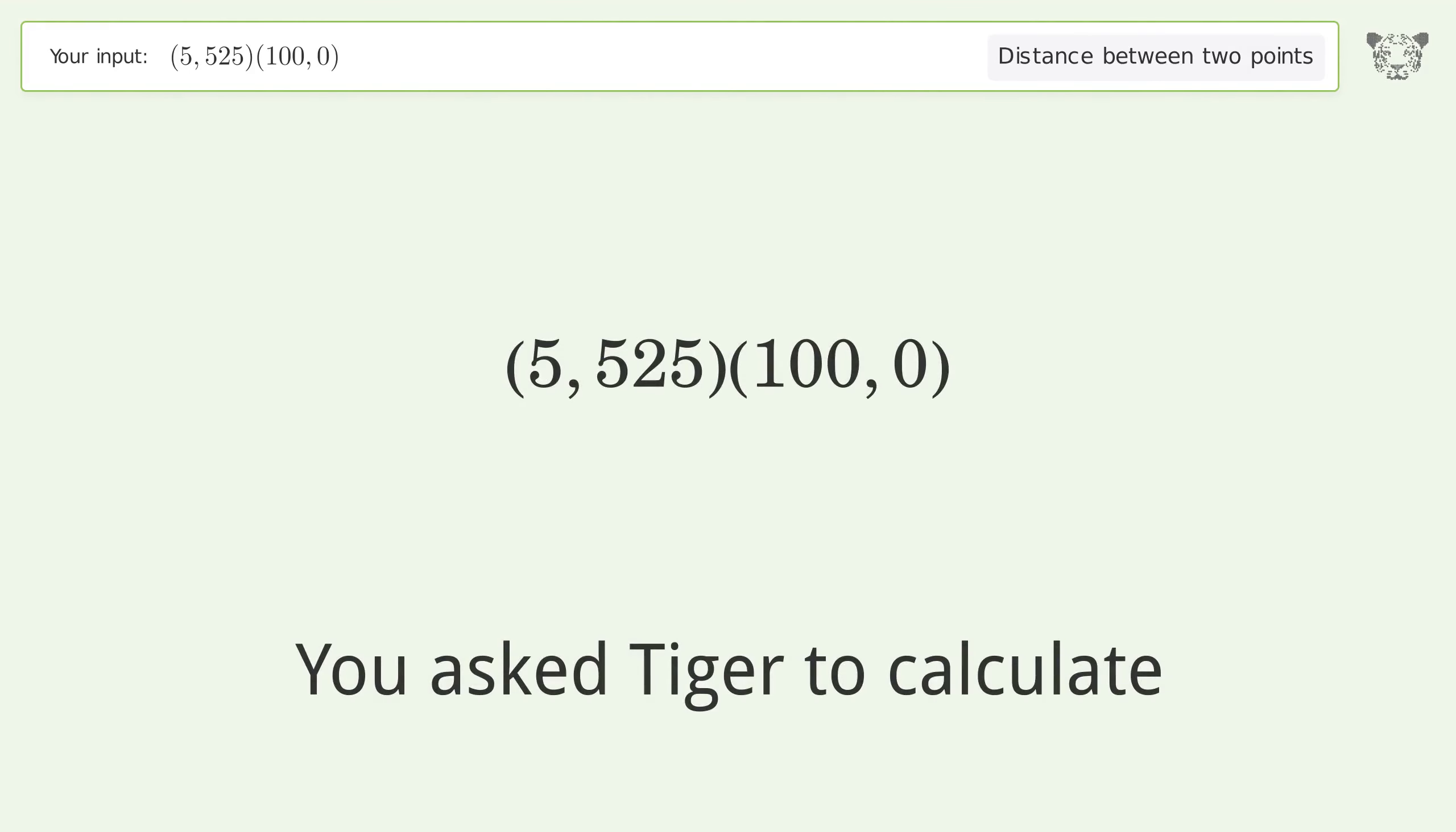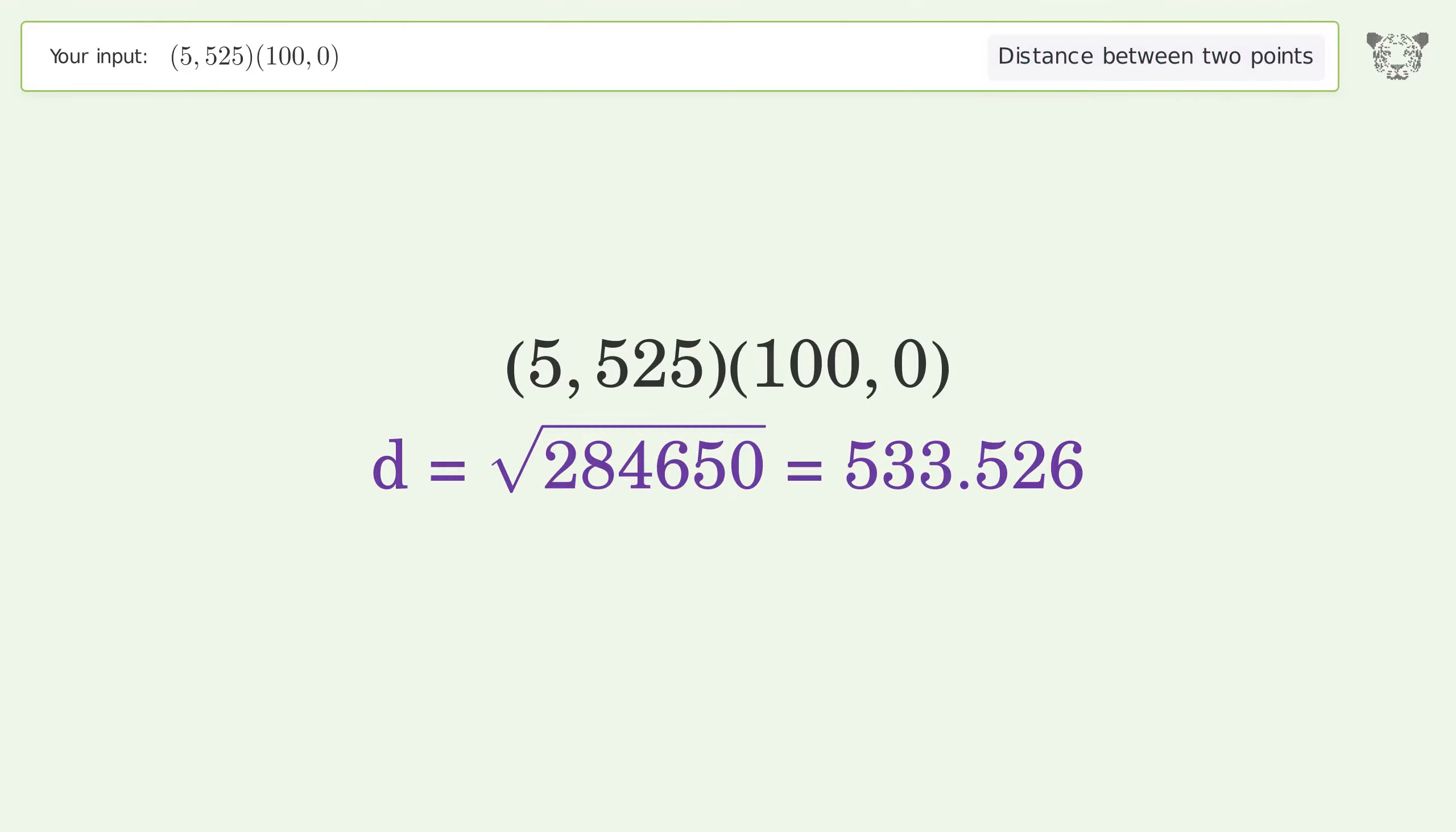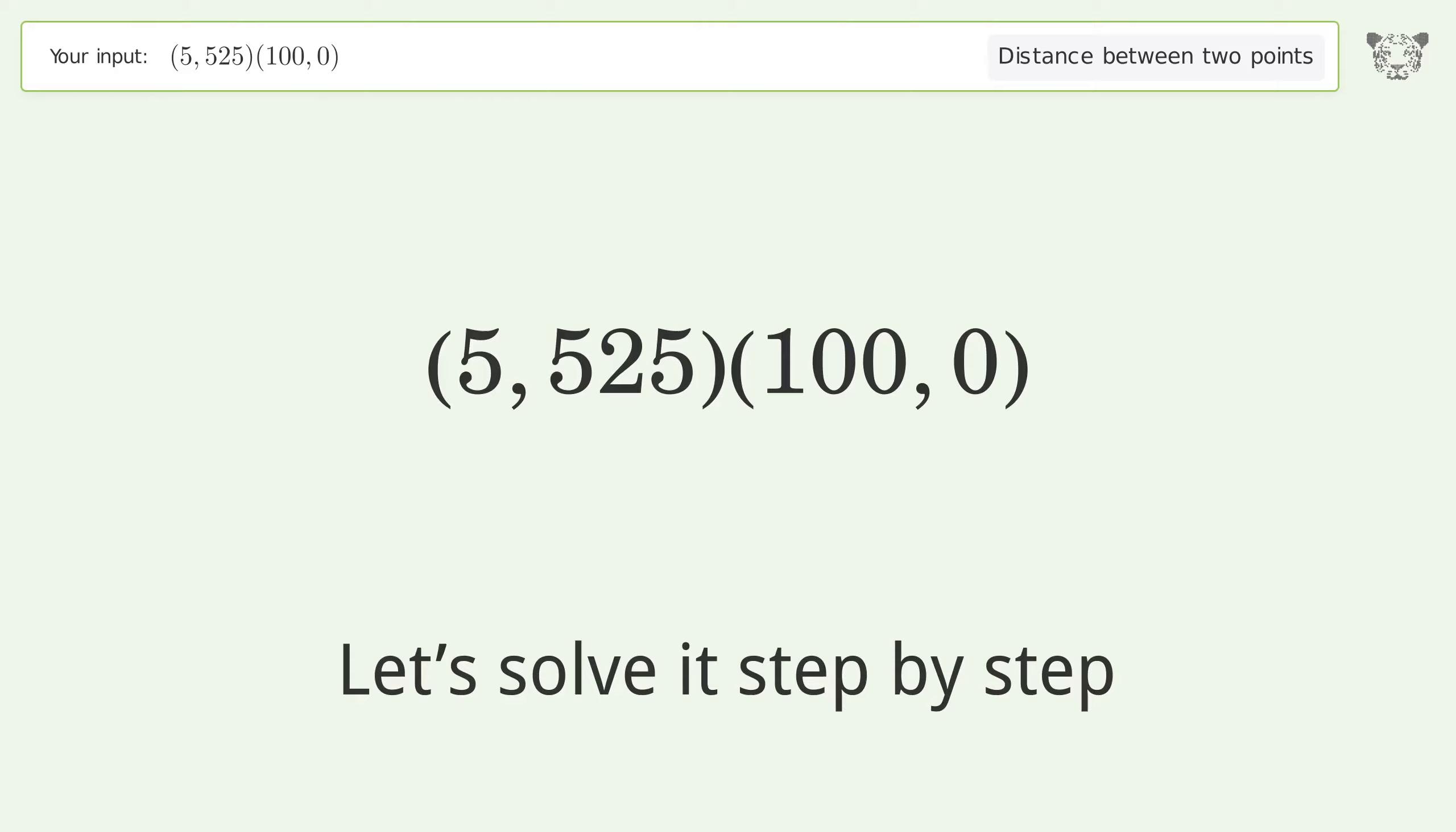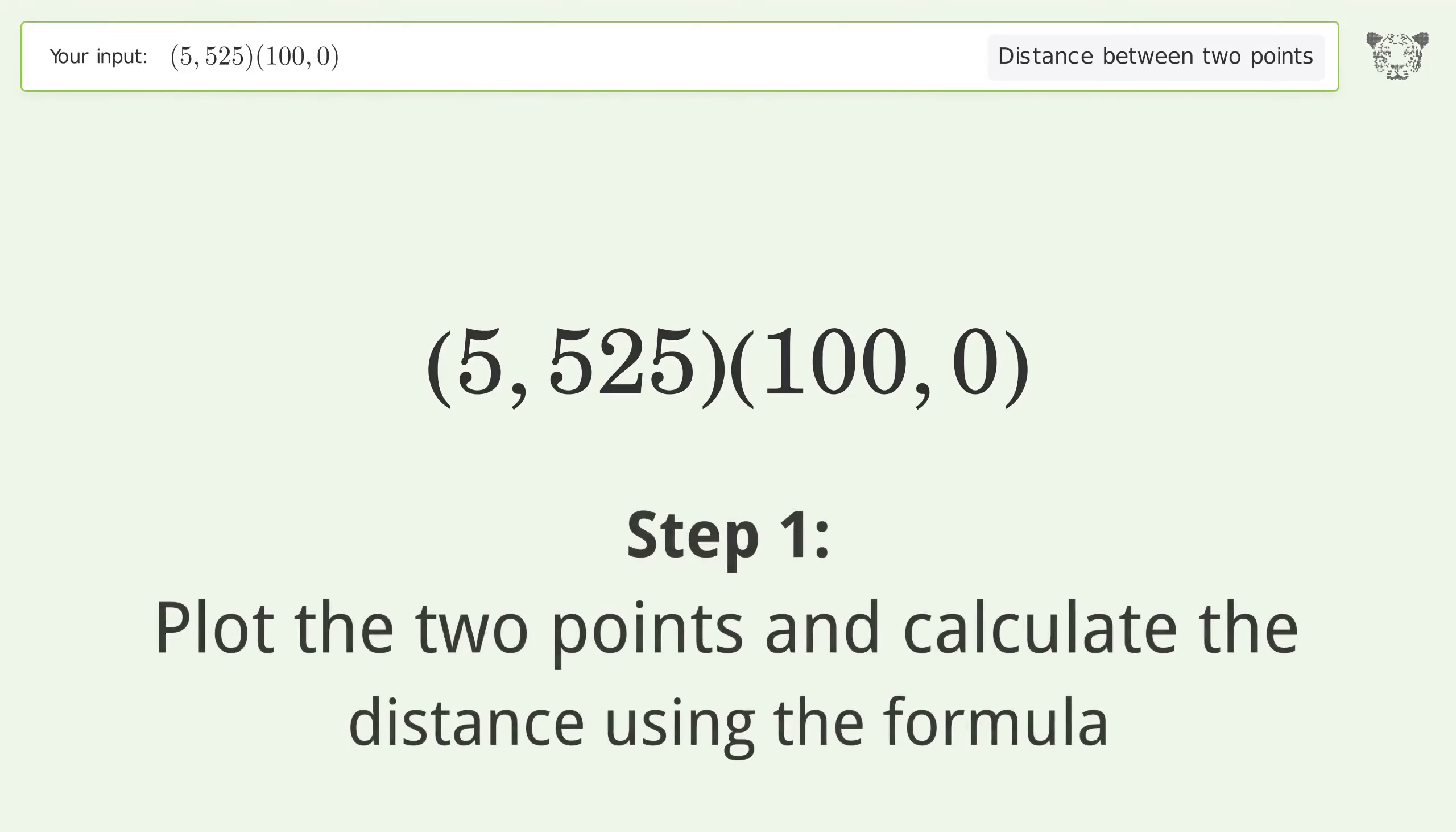You asked Tiger to calculate the distance between two points. The distance between the two points is the square root of 284,650 or 533.526. Let's solve it step by step: plot the two points and calculate the distance using the formula.